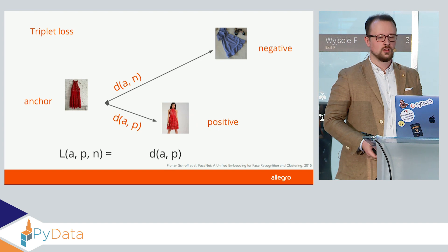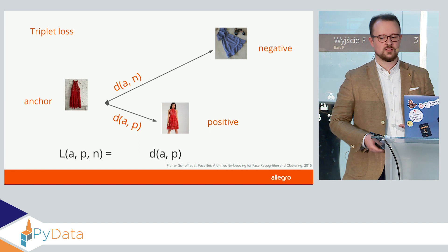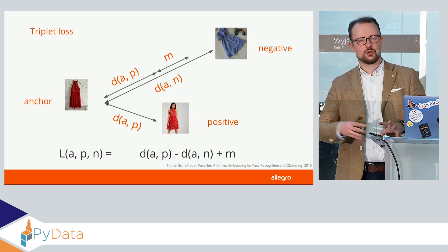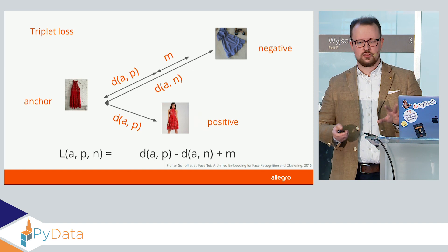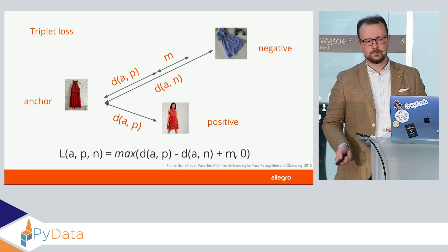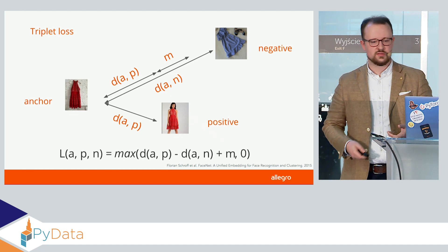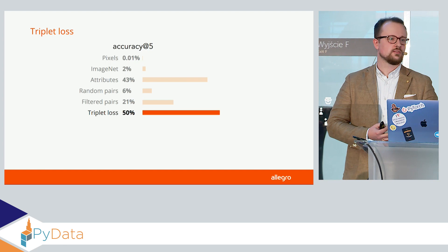Let's formalize it. We have a loss function that takes a triplet of anchor, positive, and negative. We would like to minimize the distance between the anchor and the positive, and maximize the distance between anchor and negative — but just by some margin. We don't want to push it as far as possible. If the positive is already closer to the anchor than the negative, our loss function will be zero. And it works — we get 50% accuracy, better than the attributes approach.